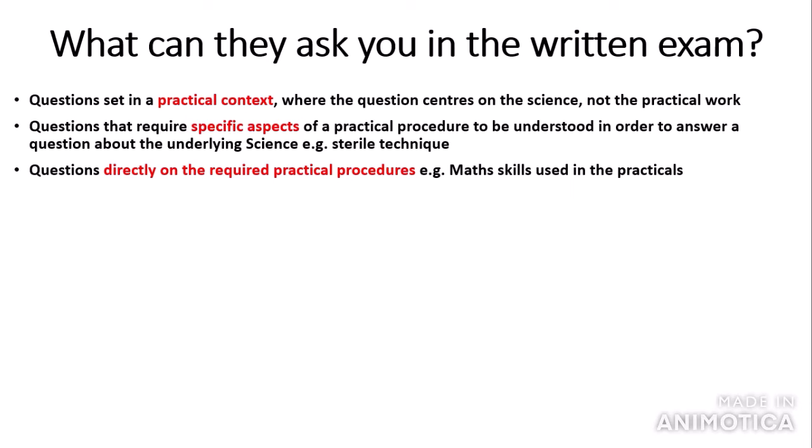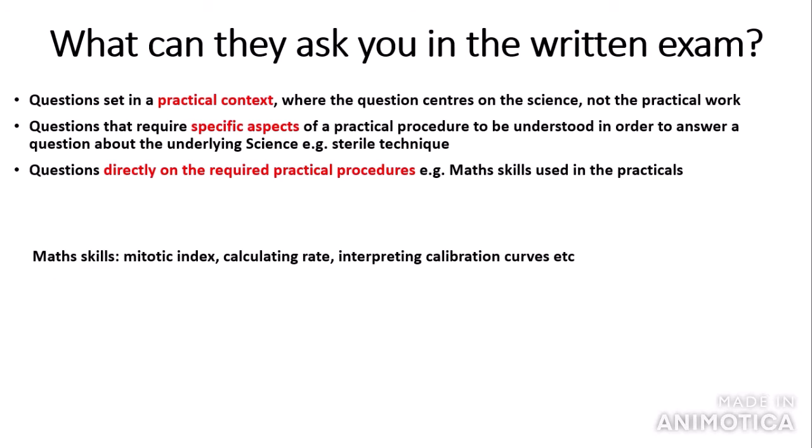There are also questions directly on the required practical procedures, for example the math skills used in the practicals to analyse your data. These can include calculating mitotic index in the second required practical, calculating rate from enzyme-controlled reaction graphs, and interpreting calibration curves used in the blood glucose concentration practical and the osmosis practical. You need to become confident with these math skills to be competent in your written exam.